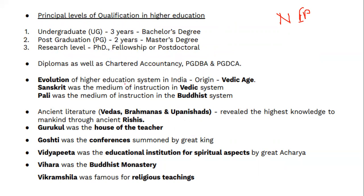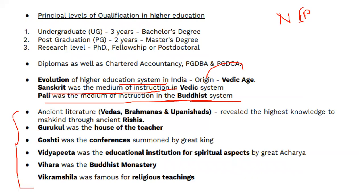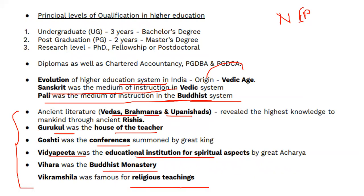The evolution of higher education started with the Vedic age. Sanskrit was the medium of instruction in the Vedic system; Pali was the medium in the Buddhist system. Ancient literature was in the form of Vedas (four Vedas), Brahmanas, and Upanishads, which were considered the highest knowledge. Key institutions included: Gurukul (house of the teacher), Ghoshti (a conference summoned by the king), Vidya Pitta (educational institutions for spiritual aspects), Vihara (Buddhist monastery), and Vikramshila, famous for religious teaching.